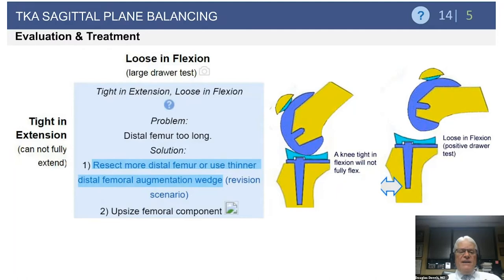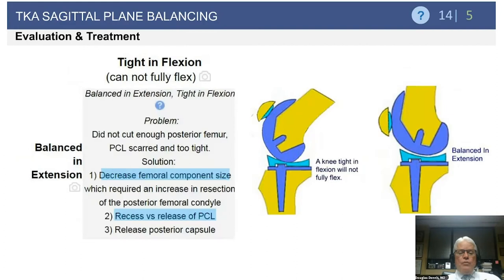What about the knee that is tight in extension and loose in flexion? Here, typically the distal femur is a bit too long. You can resect more distal femur, or in a revision scenario, use a thinner distal femoral augmentation. Your other alternative is to upsize the femur — remember, a larger femoral component affects the flexion gap only, so that will tighten your flexion gap. Two alternatives: resect more femoral bone, or upsize the femur to tighten the flexion gap.